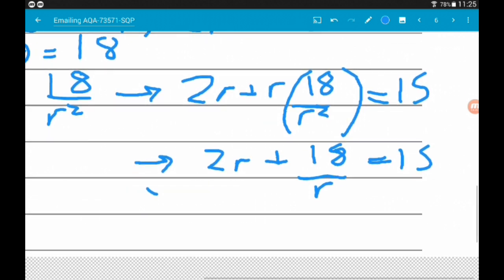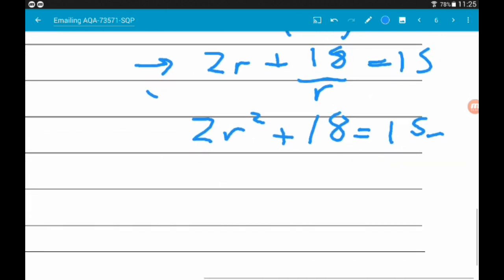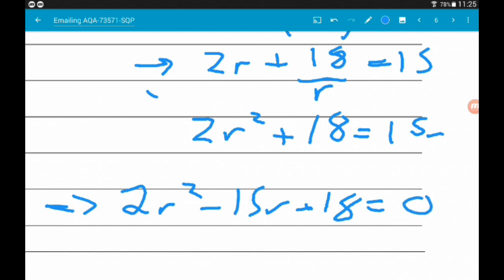Now, if we multiply through by R, we're going to get 2R² + 18 = 15R. And then finally, subtract 15R, we get 2R² - 15R + 18 = 0, as we wanted to.